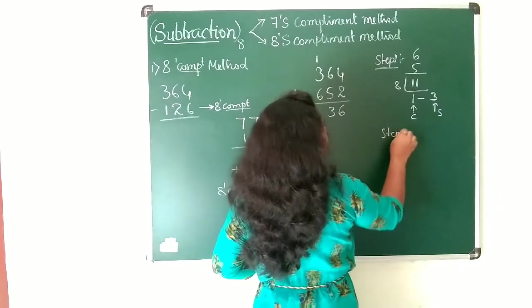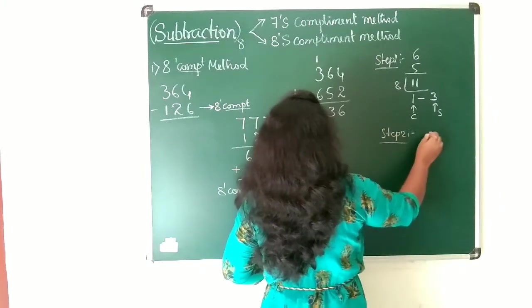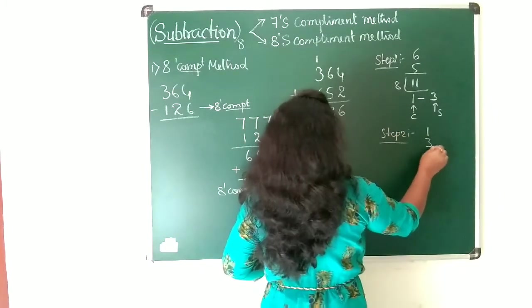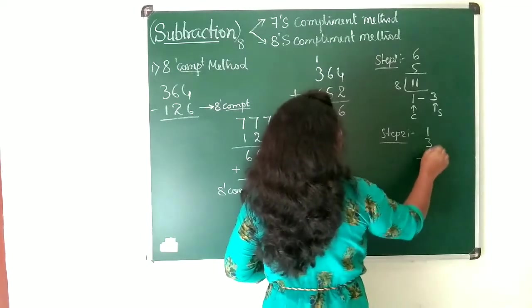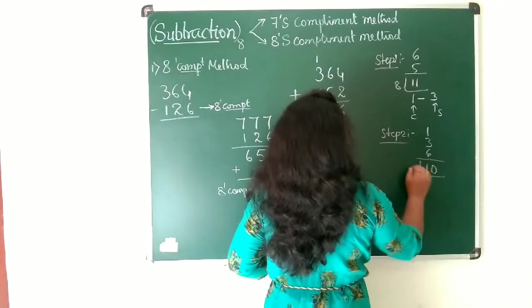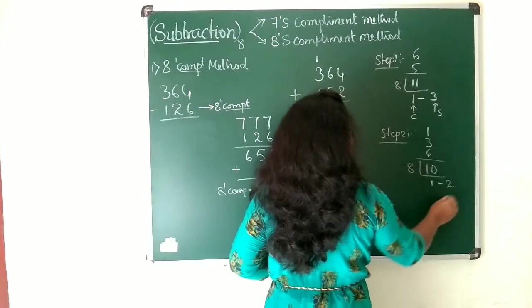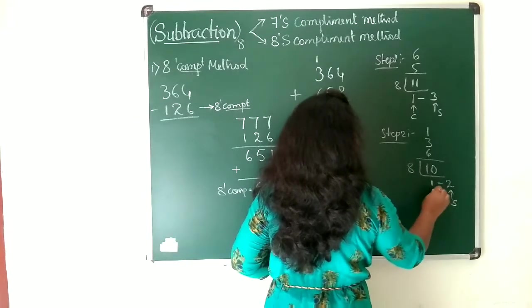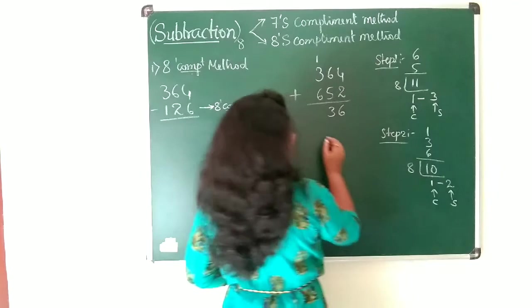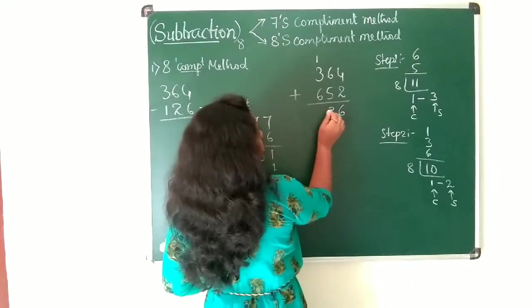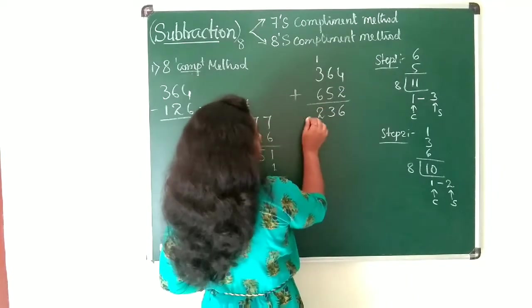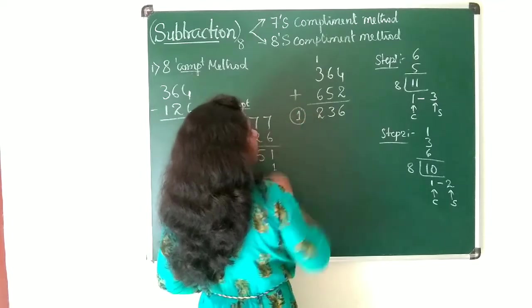Step 2 says that you need to take the next position value to add: 1 plus 3 plus 6, which is 10. Divide this by 8. 8 goes into 10 one time. 2 is the sum and 1 is carry. So sum is 2 and carry is 1.